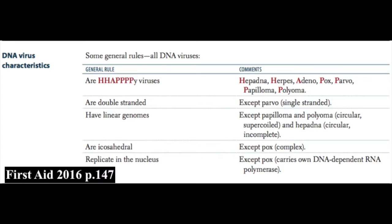They're all icosahedral except for the Pox virus, which has a complex capsid shape. They all replicate in the nucleus — the exception being the Pox virus. Remember that the Pox virus is a larger virus that carries its own DNA-dependent RNA polymerase and doesn't require the cellular machinery.